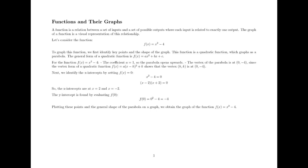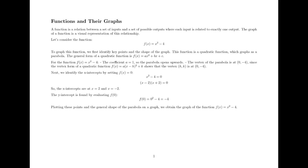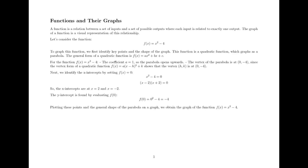Let's consider the function f(x) = x² - 4. To graph this function, we first identify key points and the shape of the graph. This function is a quadratic function, which graphs as a parabola.